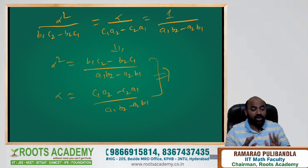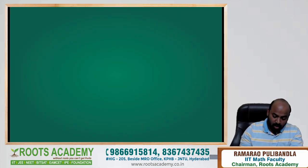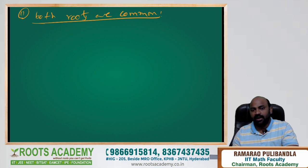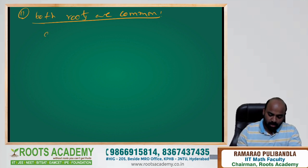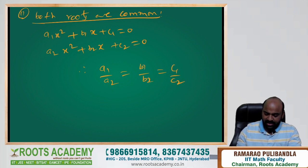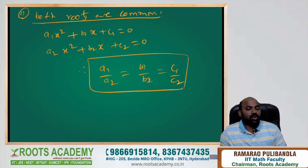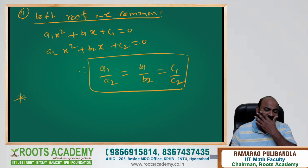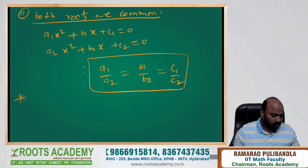When both roots are common, both equations become identical. Therefore the ratios of coefficients are equal: a₁/a₂ = b₁/b₂ = c₁/c₂. This is the case when both roots are common — the equations are identical.